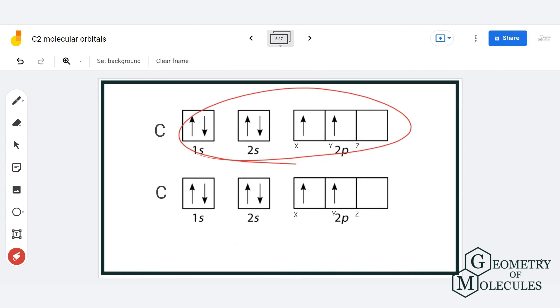So this is what atomic orbital diagram of single carbon atom looks like. Now when two carbon atoms combine to form C2 molecule, these orbitals here will combine and form molecular orbitals.